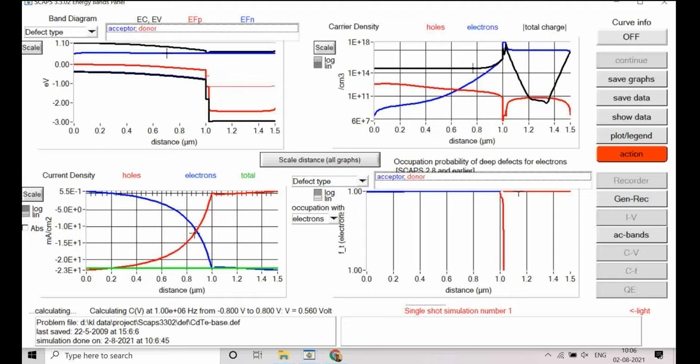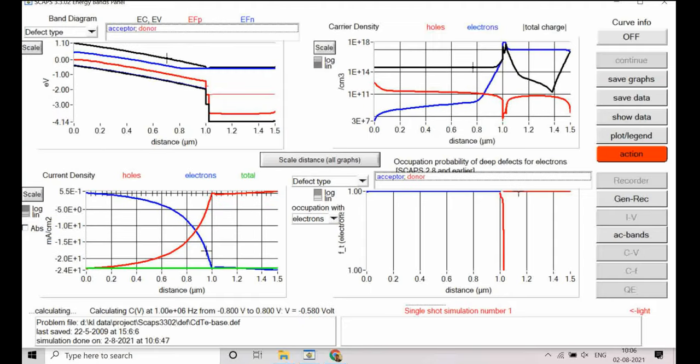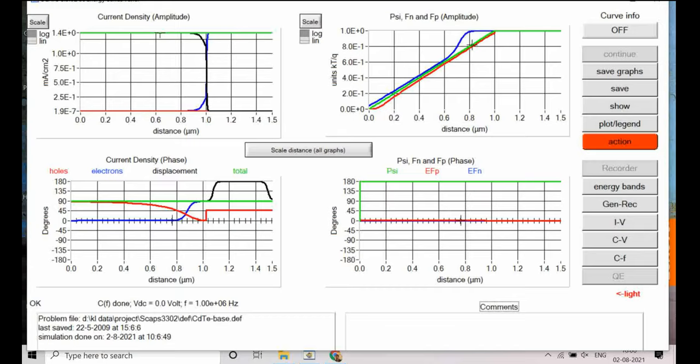Let me simulate out CV and CF. So give single sort. So you can see CV and CF is being simulated. So it is done.